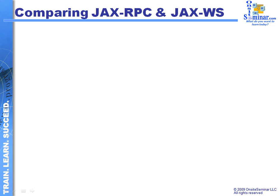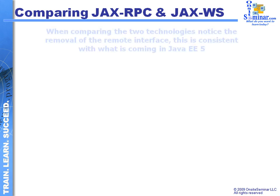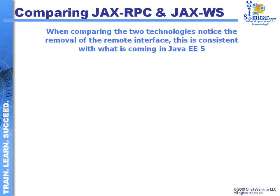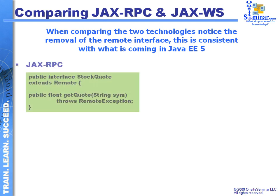We have two different ways to develop applications for web services. One is the JAX-RPC remote procedure call option, the other one is the JAX-WS formulation. Let's look at a little comparison between these two particular methods and look at the way these two particular components will create services in the Java programming language.